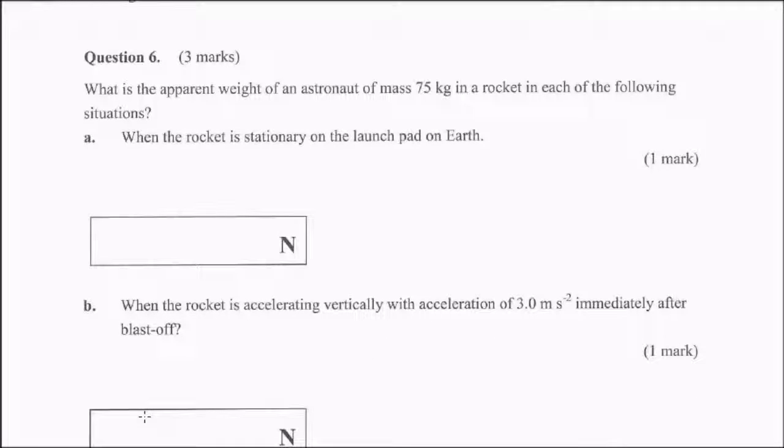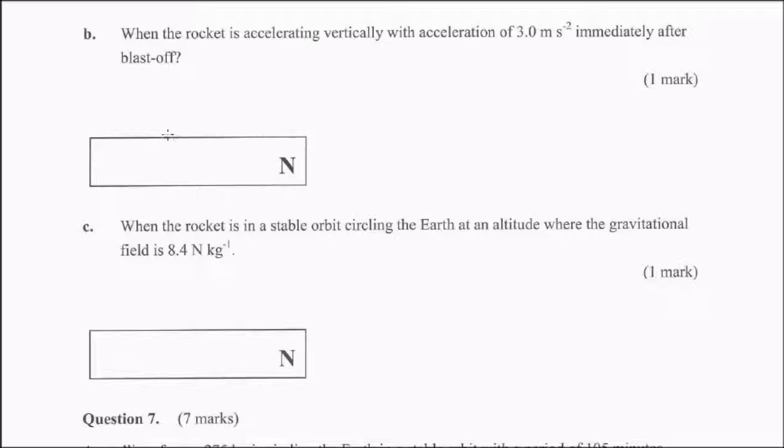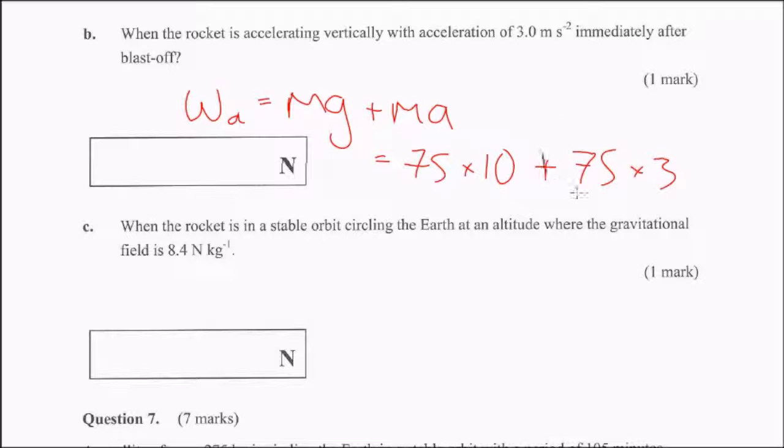Question six apparent weight of an astronaut. The rocket is stationary on the launch pad so he's on earth so his apparent weight is mg, so 750 newtons. It's ascending vertically with an acceleration of three so the way we work this out is the apparent weight is mg plus ma. So, I'm going to say that the acceleration is a positive direction in this question. So we're going to have 75 kilos times 10 is mg which is our answer from the first part plus 75 times 3 that's due to the acceleration due to the rocket moving and so we get 975.